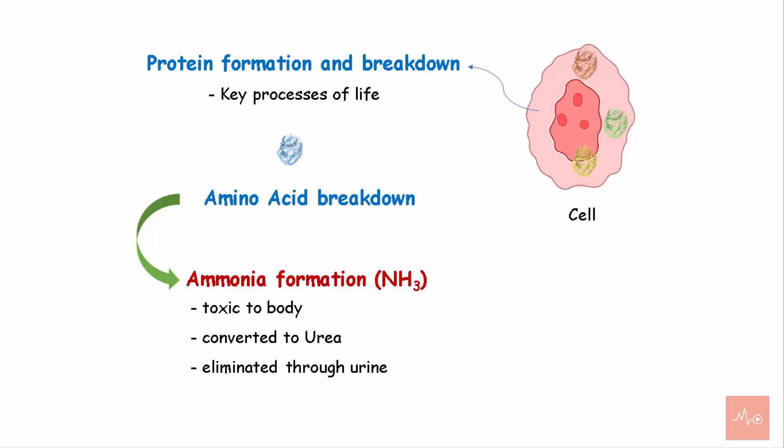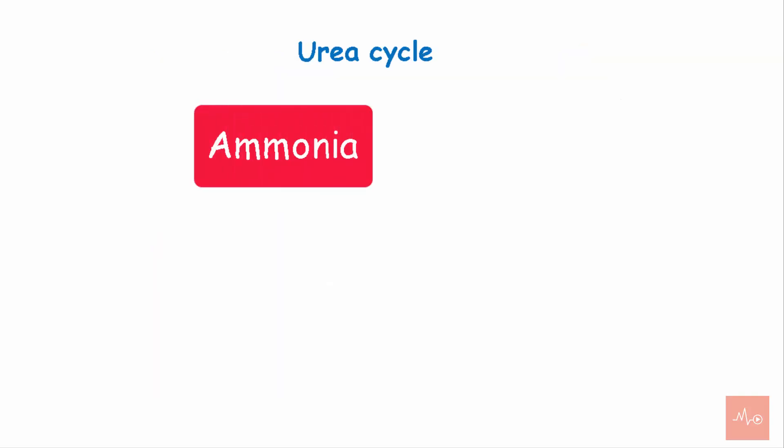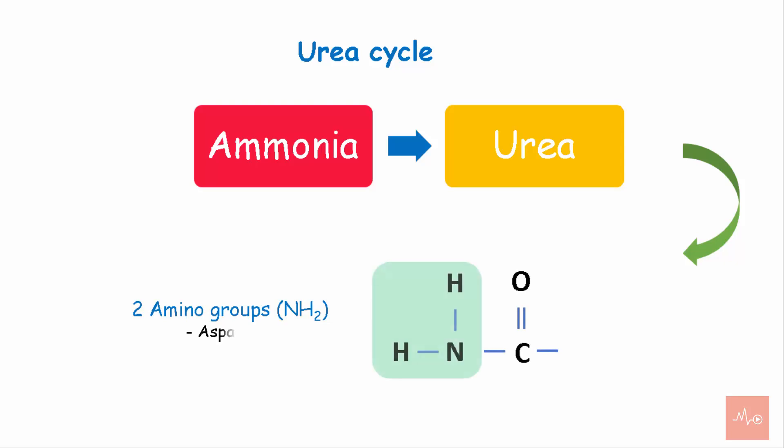Through the urine, so urea cycle is the process of conversion of ammonia to urea. Urea contains two amino groups - one from amino acid aspartate and one from ammonia. Urea cycle was first described by Hans Krebs and Kurt Henseleit in 1932, so the urea cycle is also called the Krebs-Henseleit cycle. Urea cycle takes place in the liver.